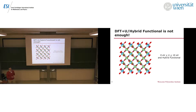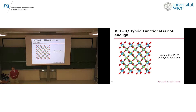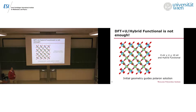We can take DFT+U or hybrid functionals, but using those methods alone is not enough to actually form a polaron. If I just take a perfect crystalline TiO2 and run the simulation with DFT+U or hybrid functionals, I'm going to get a delocalized solution — the electron will be spread throughout the cell. The reason is that the initial geometry determines the final solution. If I give it a perfectly symmetrical geometry, it's going to stay in a geometry that is not favorable for polaron formation.